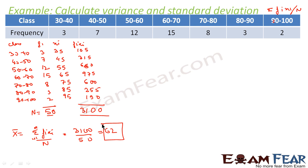Now we find the deviation of xi from mean. We're going to find xi minus 62. 35 minus 62 is minus 27. 45 minus 62 is minus 17. 55 minus 62 is minus 7. 65 minus 62 is 3. 75 minus 62 is 13. 85 minus 62 is 23. 95 minus 62 is 33.